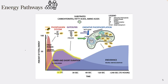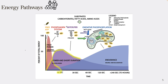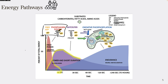Let's review again. We have our first pathway, the ATP-PC system or ATP-phosphogen system — PC stands for phosphocreatine, which is the same as creatine phosphate. In glycolysis we have two separate pathways: anaerobic, meaning no oxygen, and aerobic, meaning lots of oxygen. That's two more pathways.